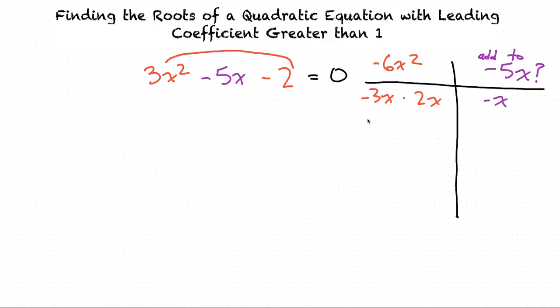Two other possible factors are 3x and -2x. When we add those together, we get positive x.